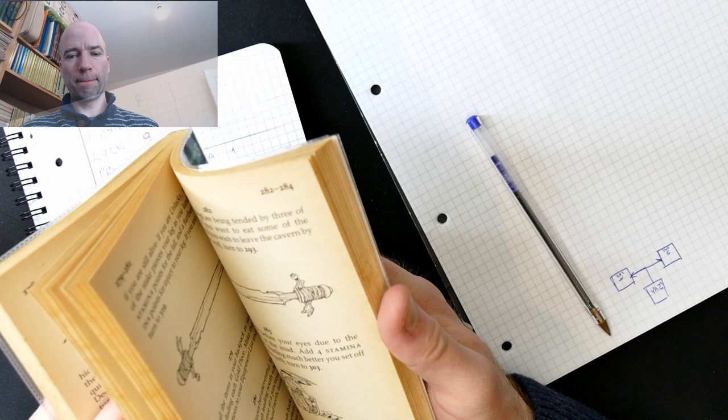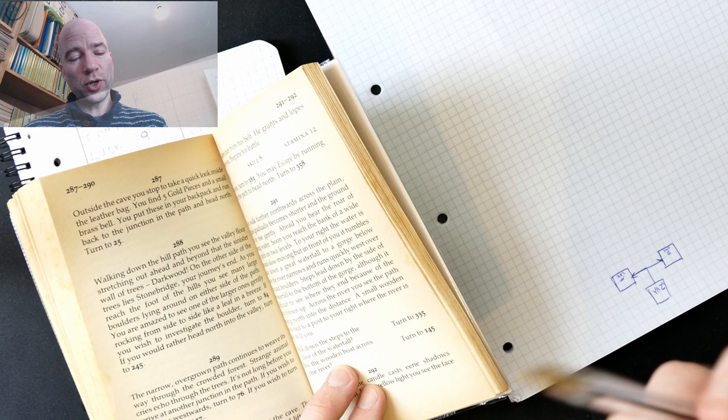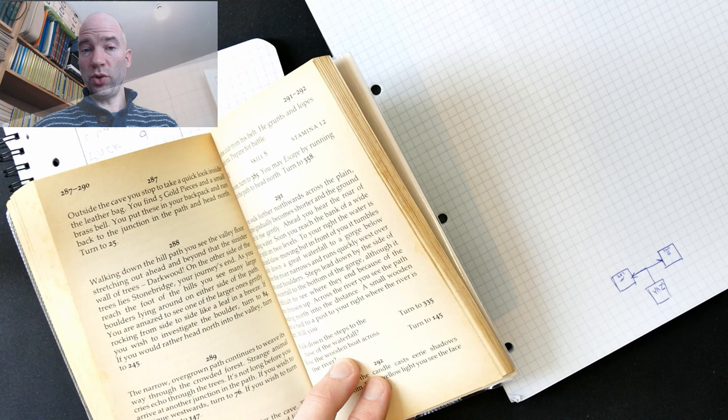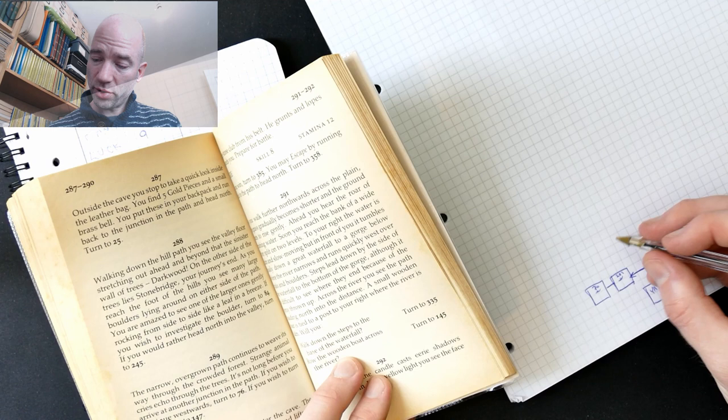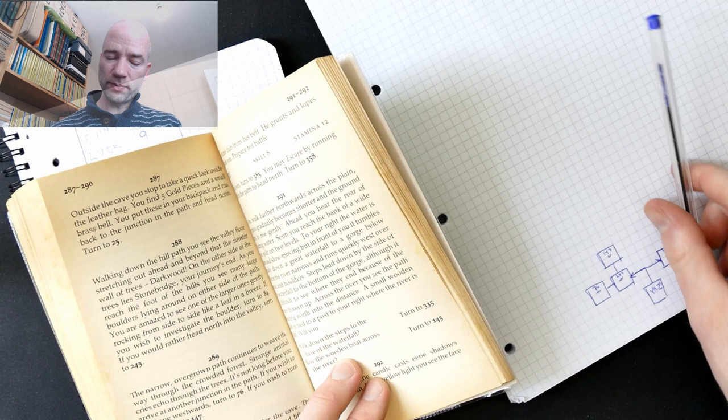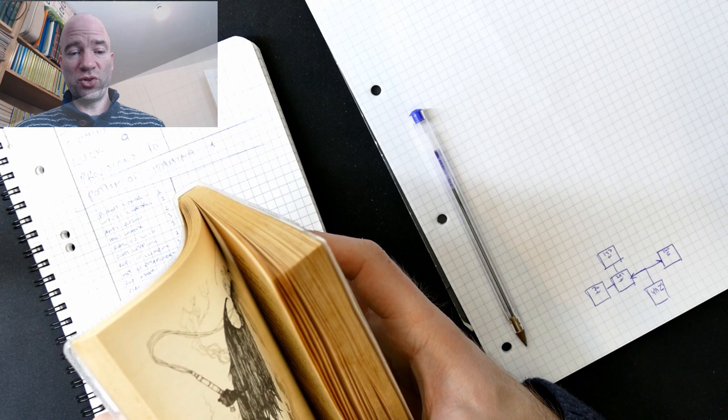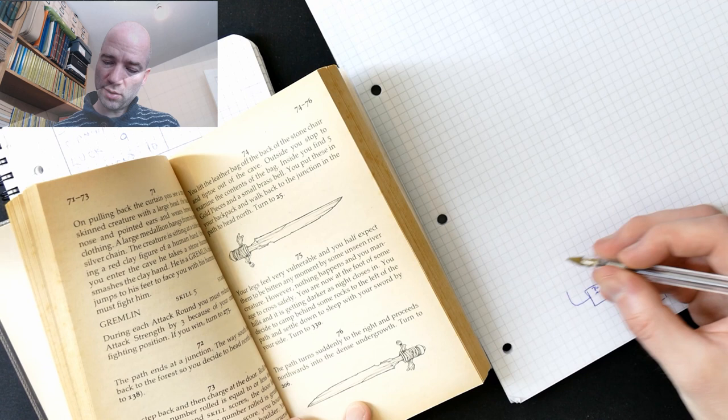Even though I have played this before, I have no idea where to go now. The narrow, overgrown path continues to weave its way through the crowded forest. Strange animal cries echo through the trees. It's not long before you arrive at another junction in the path. If you wish to continue westwards, turn to 76. If you wish to turn north, turn to 147. So, let's go west again. I hear life is peaceful there. I'm not sure that is true in this case, but there you go. The path turns suddenly to the right and proceeds northwards into the dense undergrowth. Turn to 206. So, it's turning around, like so. And 206.